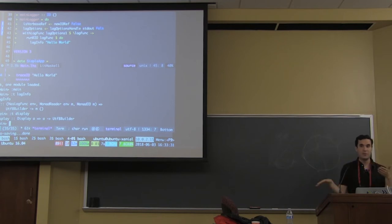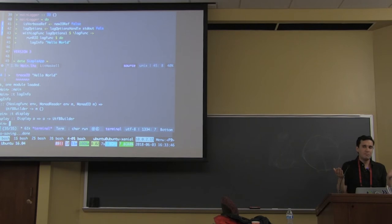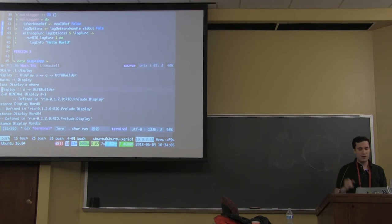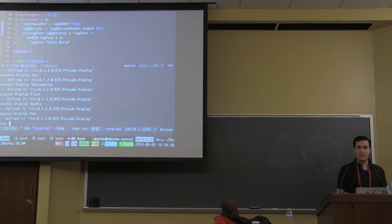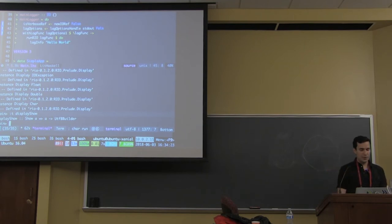A lot of people use show for debugging and human-readable output — don't do it. As soon as you do that, you break the contract with the read type class. Display, on the other hand — if I look at the display type class, I have a bunch of instances. As long as I do display of the value, it should work. Worst case, if you don't have a display instance for your type but just want to use show, you have display show, which takes a show constraint, executes show on it, and transforms it into a UTF8Builder for use in your logs.